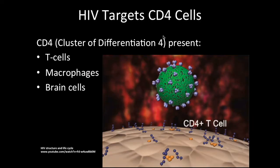This is how the HIV virus is specific for CD4 cells. The CD4 is a glycoprotein present on CD4 cells — for example, T lymphocytes, macrophages, and brain cells such as astrocytes — and they're present on the surface of their membrane. The HIV virus is going to attach to these CD4 glycoproteins with its own glycoproteins.